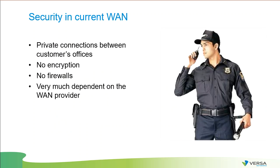Security in the current WAN is a pain point for most customers. The only security provided by service providers is that the connection will be private — when you connect to the service provider's network, you won't see anyone else's network and nobody else will see yours. But at the same time, the connection is not encrypted. Most service providers do not provide any firewalling features, so you will need to handle those on your own. And if you start working with one service provider, you will be locked to it — making it very hard to create a connection between multiple service provider networks for WAN connectivity.